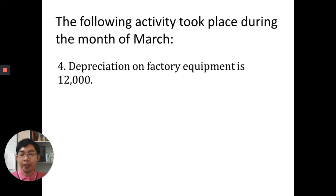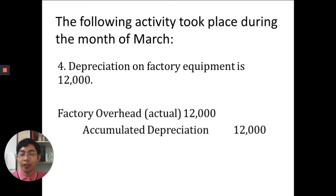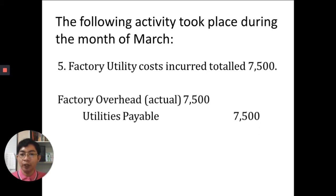Number four: depreciation on factory equipment is $12,000. Normally the entry is debit depreciation expense, credit accumulated depreciation. However, because this pertains to factory equipment, the entry is debit factory overhead actual $12,000 and credit accumulated depreciation $12,000.